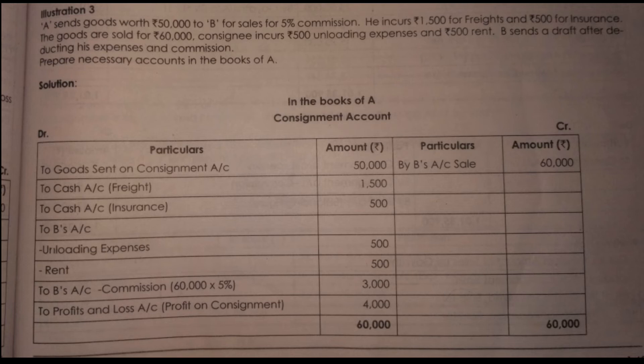In this concept, let's go to consignment accounts. In illustration 3, A sends goods worth 50,000 to B for sales. So, who is the consignor? A is the consignor — they are sending goods worth 50,000.